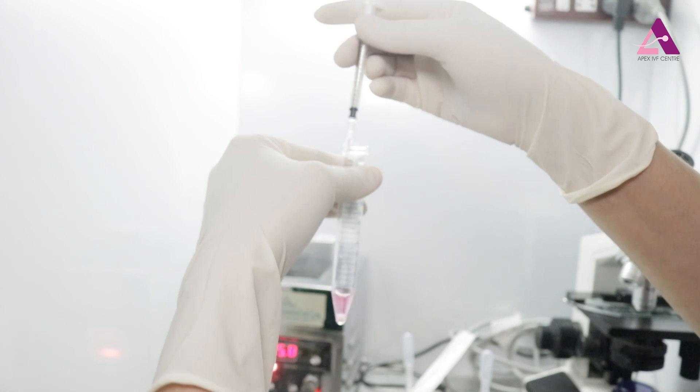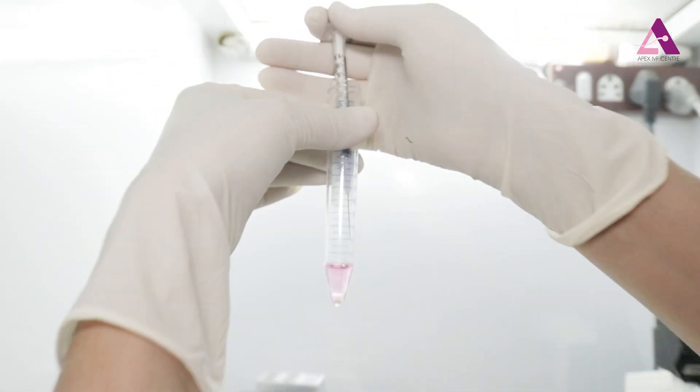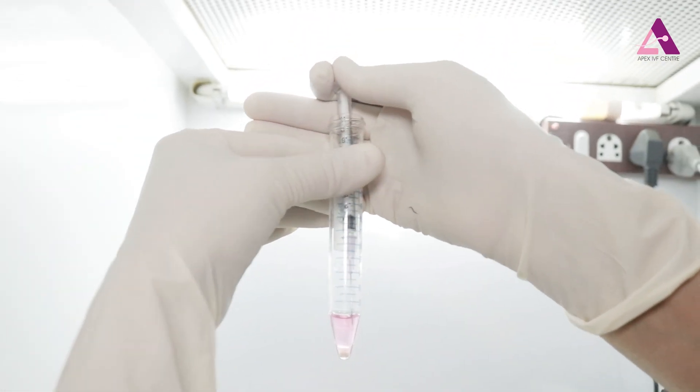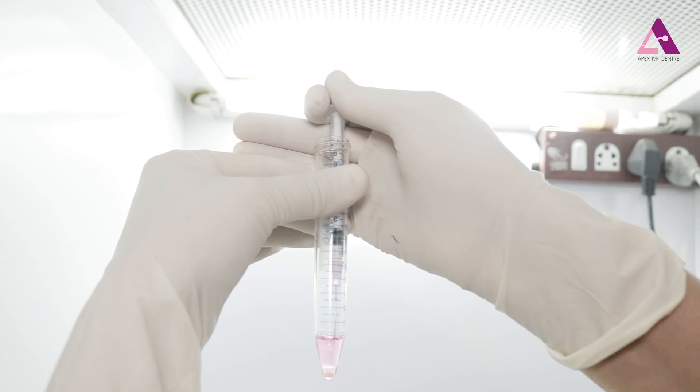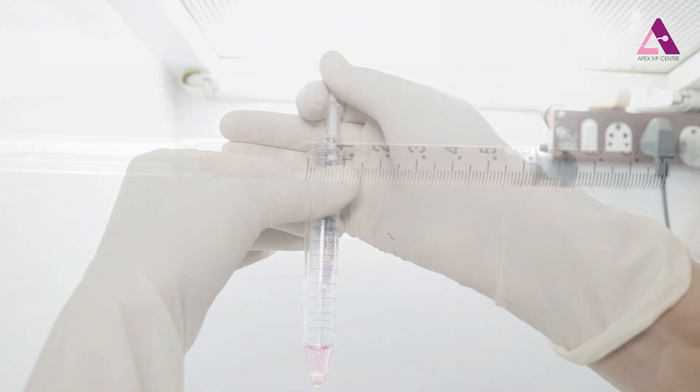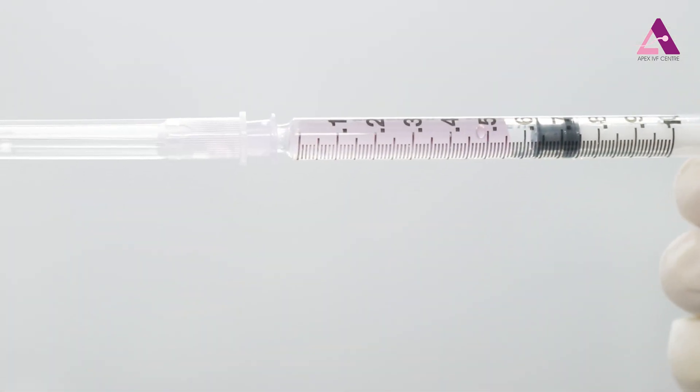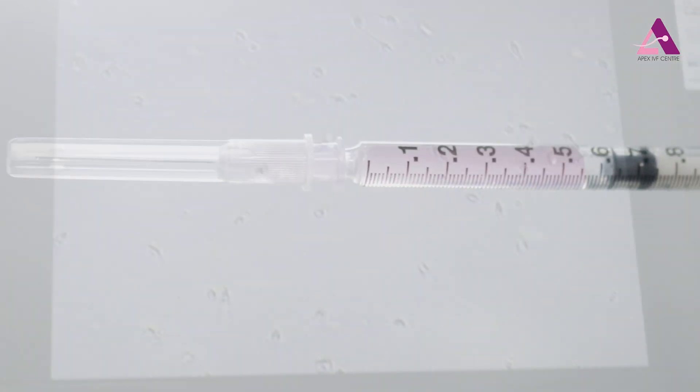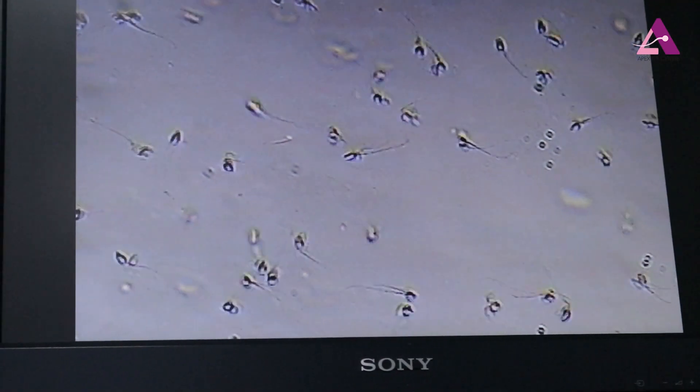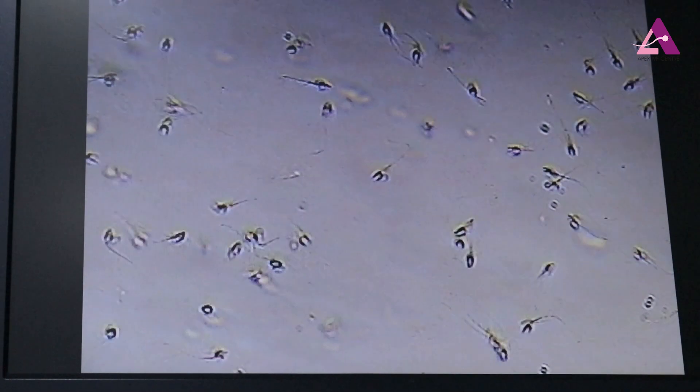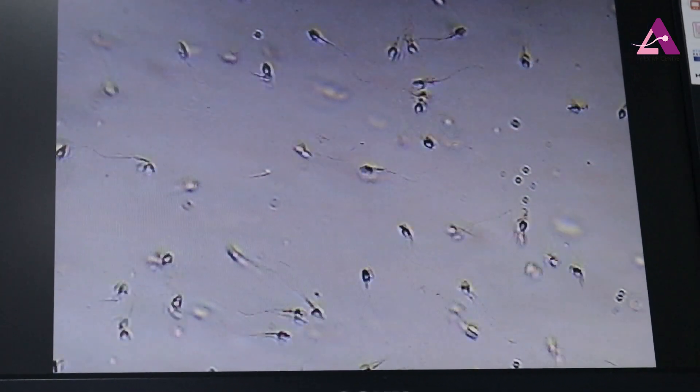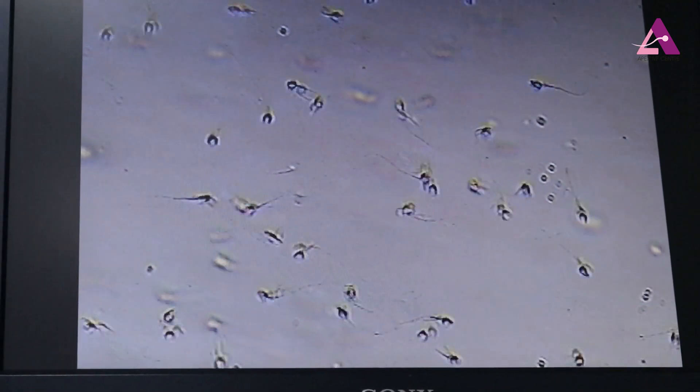And now we collect the best sperms from the upper layer. Usually 0.2 to 0.3 ml is enough for an IUI because the capacity of the uterus is only this much. Now you can see how we have separated the best sperms from the whole semen sample.